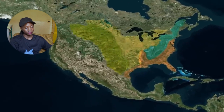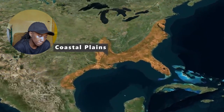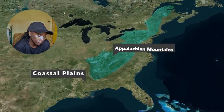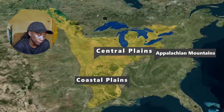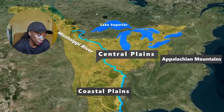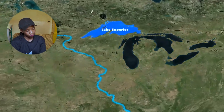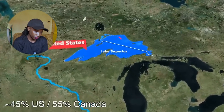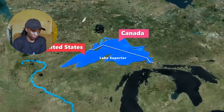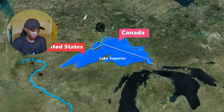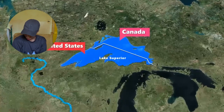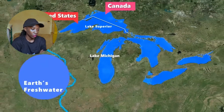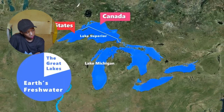Let's start with the lower 48. Generally there are seven main physical regions: the coastal plains extending from the north Atlantic states to the Gulf of Mexico, split off by the Appalachian Mountains. From there you have the central plains and the Great Lakes region east of the Mississippi River. Lake Superior is the largest lake and the largest freshwater lake by surface area in the world — but only about 45% belongs to the U.S.